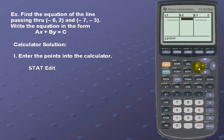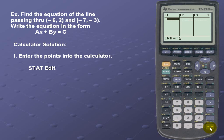Now we're going to put in our points. Negative 6, negative 7 for our x values, and our y values are 2 and -3.